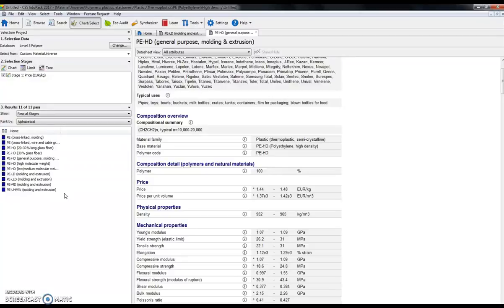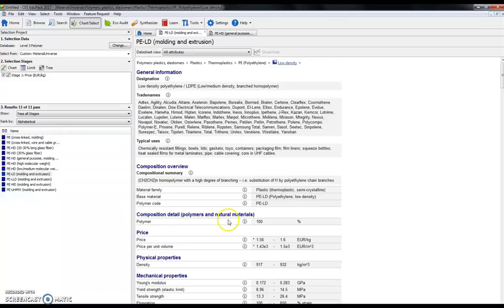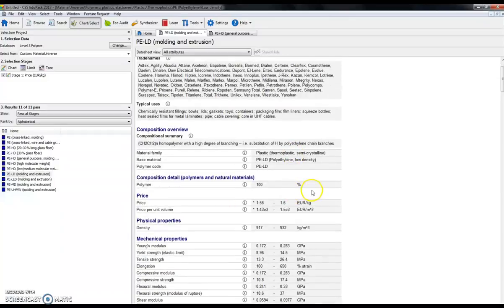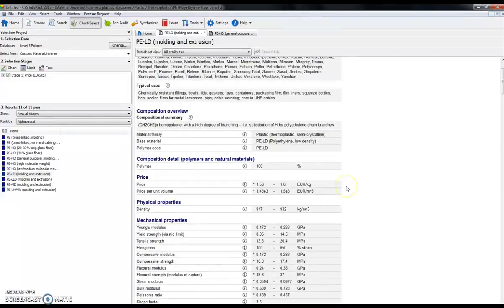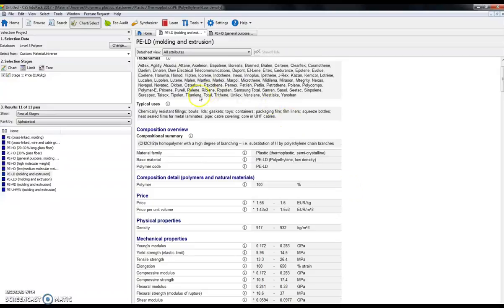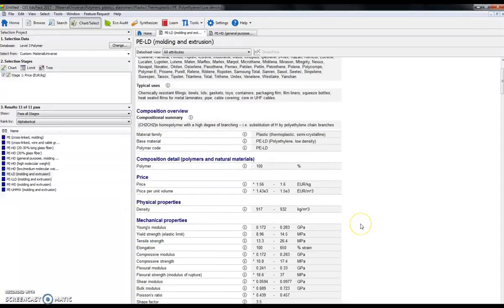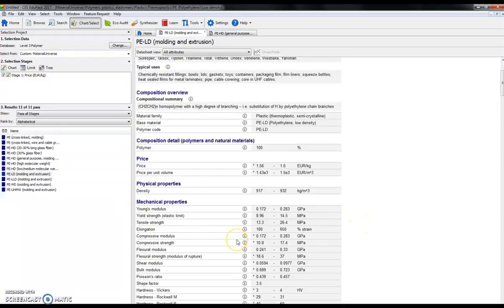So let's have a closer look at polyethylene, low density, molding and extrusion grade. And here we have a lot of information on that particular material. It goes through the typical uses, what's its composition as we've touched on before, what's its price, its density, and a lot of the mechanical properties.